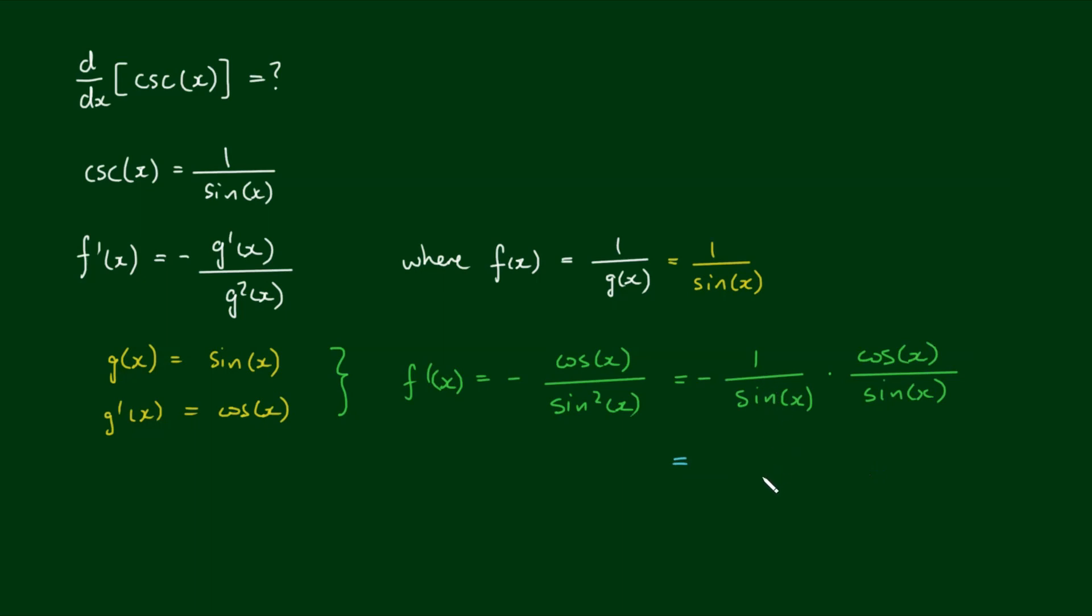1 over the sine of x is what we started with, which is the cosecant of x. Cosine over sine is the cotangent, it's the cotangent function.